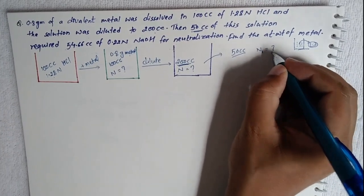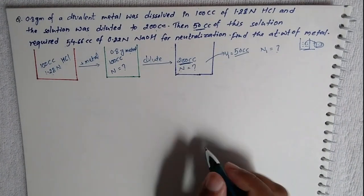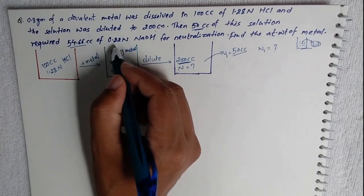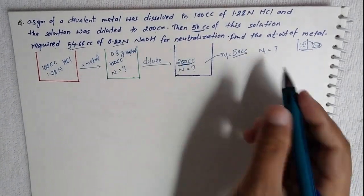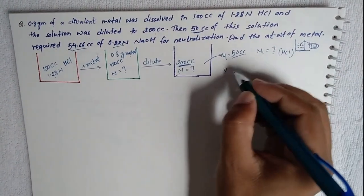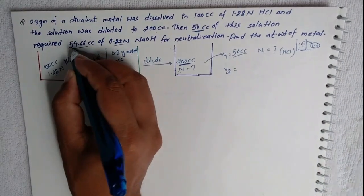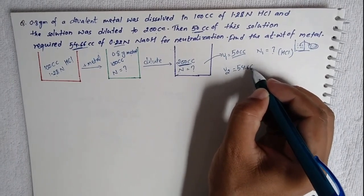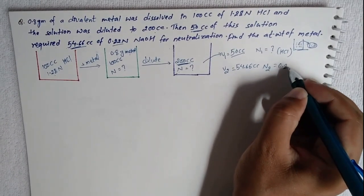Let N1 equal the unknown concentration, and V1 equals 50 cc. This 50 cc of HCl is neutralized by 54.66 cc of NaOH having normality 0.22 N. We apply the normality equation: N1 × V1 = N2 × V2.